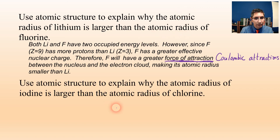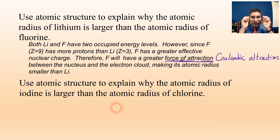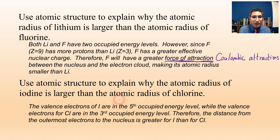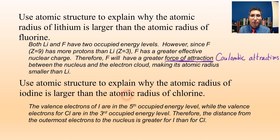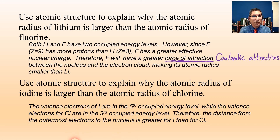Here's another question: use atomic structure to explain why the atomic radius of iodine is larger than the atomic radius of chlorine. Looking at the periodic table, we can see they're both halogens, but iodine is farther down on the periodic table than chlorine. The valence electrons of iodine are in the fifth occupied energy level, while the valence electrons of chlorine are in only the third occupied energy level. Therefore, the distance from the outermost electrons to the nucleus is greater for iodine than for chlorine.